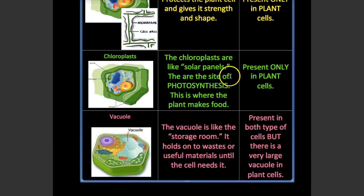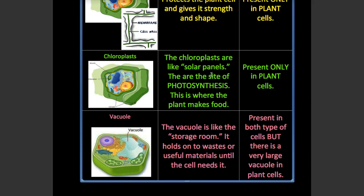Chloroplast is only present in plant cells — it's like the solar panels. It's the site of photosynthesis, which is where the plant makes food. It's also what makes the plant green because it contains the green pigment chlorophyll.